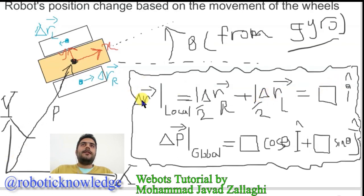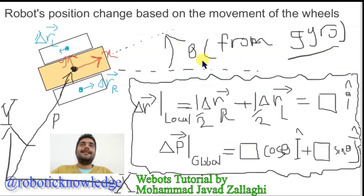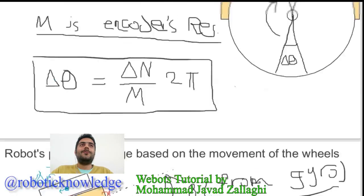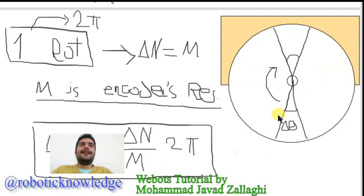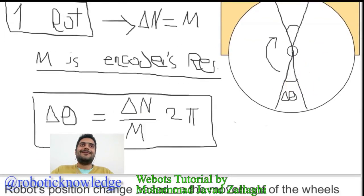So you can project this local vector using cosine and sine of this theta. Don't be confused — this theta is the kinematic angular state of the mobile robot, not the wheel angular state.